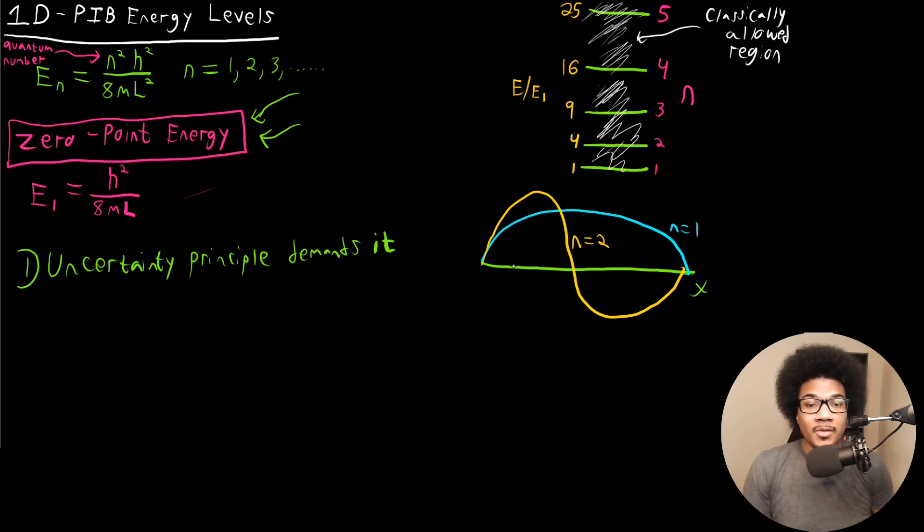But what you notice about these wave functions is that there's curvature in these functions everywhere. And if you think back to our kinetic energy operator, the form of our kinetic energy operator is negative h-bar squared over 2m d dx squared. So in order for the energy to be zero, then there would have to be no curvature here.